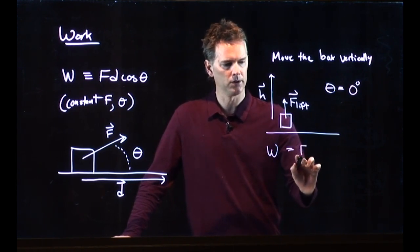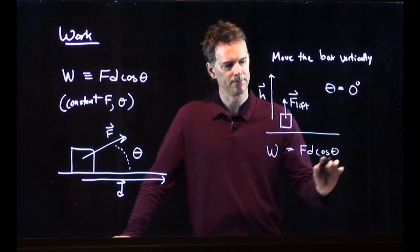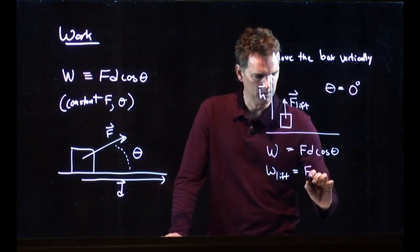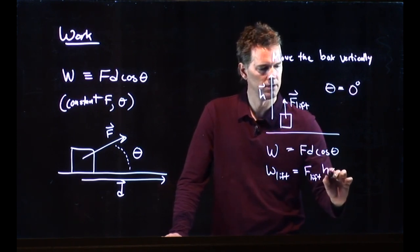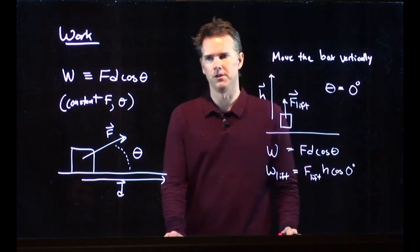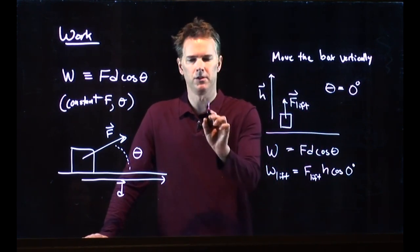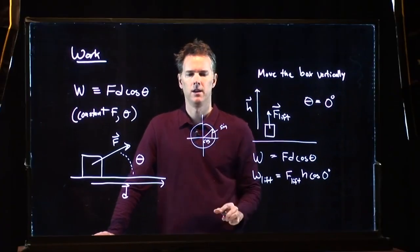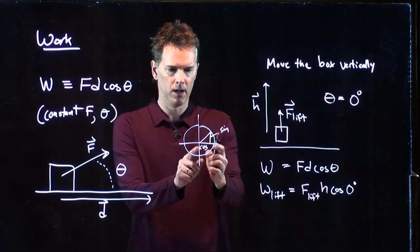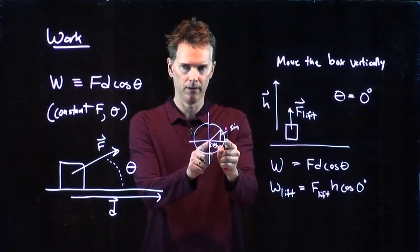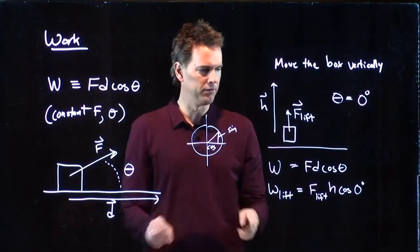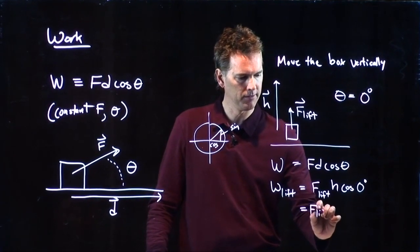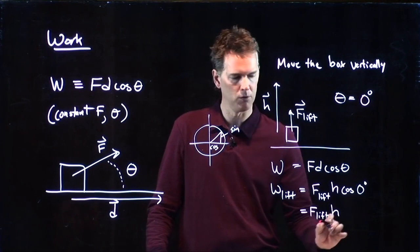And so now we can calculate the work based on what we said over there. It's Fd cosine theta. So the work that we do in lifting this is Flift times h times cosine of zero degrees. So how do we remember what cosine of zero degrees is? We go back to our unit circle. Here's our triangle. This side is cosine. This is sine. And so as I rotate this thing down to the horizontal axis, the bottom side of this triangle gets bigger. The sine goes to zero. So cosine of zero is actually one. Sine of zero is, of course, zero.